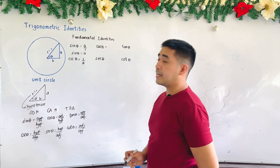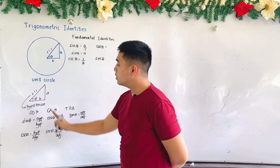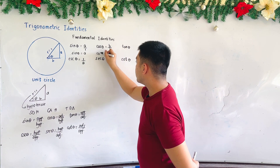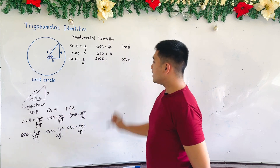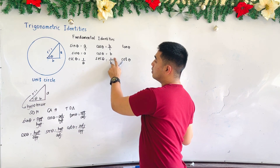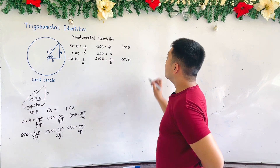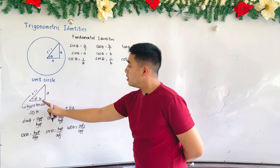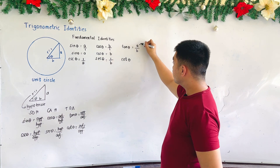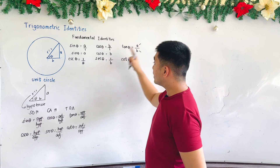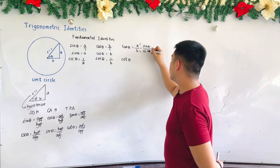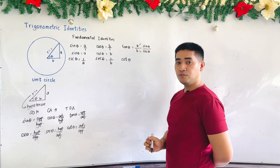Cosine theta is adjacent over hypotenuse. The adjacent side is B. Therefore, cosine theta is equal to B over 1, so cosine theta equals B. Secant theta is hypotenuse over adjacent, or 1 over B — which means secant theta is 1 over cosine theta. For tangent theta, that is opposite over adjacent, which is A over B. Since A is sine theta and B is cosine theta, tangent theta equals sine theta over cosine theta.